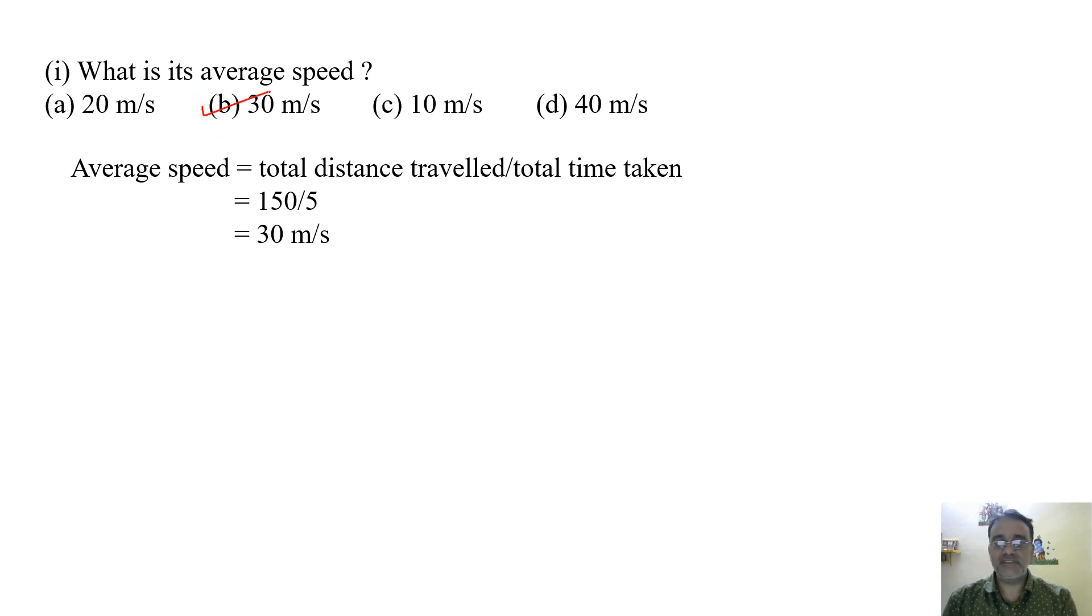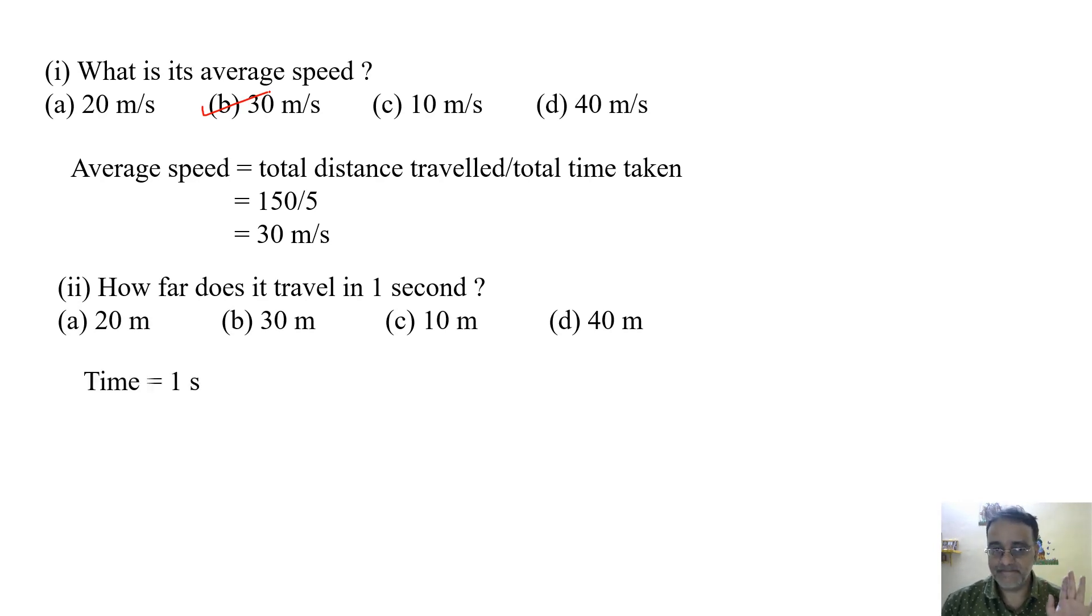Now we will move toward the second question. How far does it travel in 1 second? So time is 1 and the formula is distance equals speed into time. The speed we already got is 30 meters per second in the previous question. So 30 into 1, we will get 30 meters. So the correct option is B.